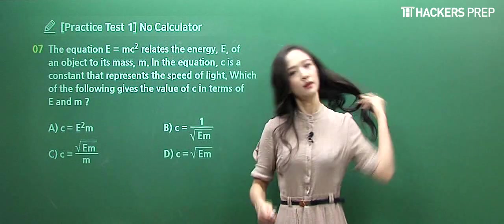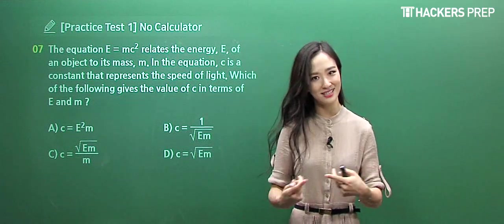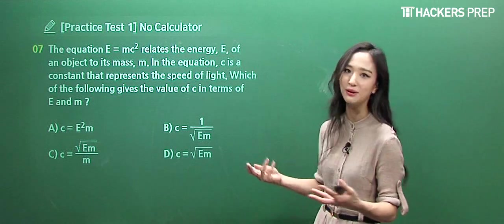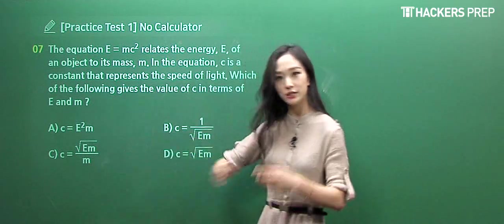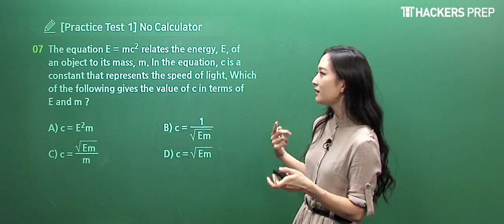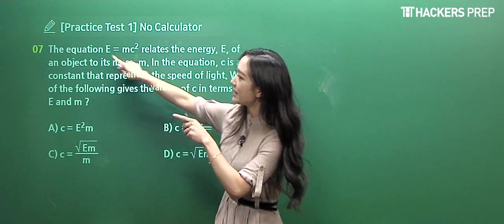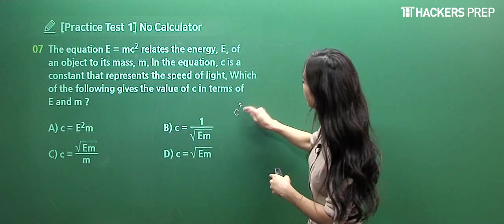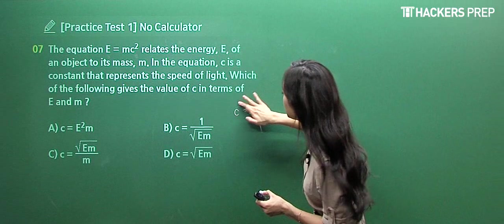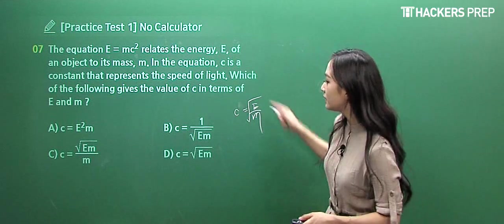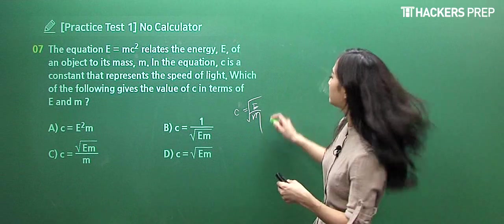Let's move on to number seven. They're presenting an equation: E = MC². Does that look familiar? Einstein's equation of energy, mass, and the speed of light. If you go through the answer choices, you can solve this without actually reading the question. The equation is rearranged in terms of C. If you divide by M and square root both sides, C² = E/M, so C = √(E/M).